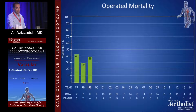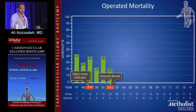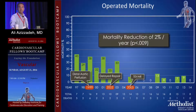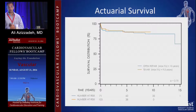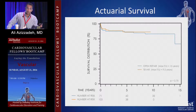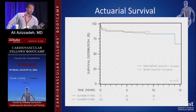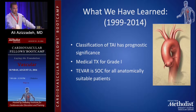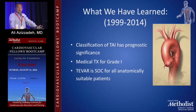Looking at operated mortality over the course of the study, as we instituted different treatment approaches — specifically TEVAR — the mortality went down. There was a 2% reduction per year over the course of the study in mortality related to traumatic aortic injury. These patients survive; survival is around 87%, and it's the same for open versus TEVAR. These patients usually have relatively normal aortas — I haven't seen device migration, and endoleak is very rare — so TEVAR for traumatic aortic injury is a durable repair.